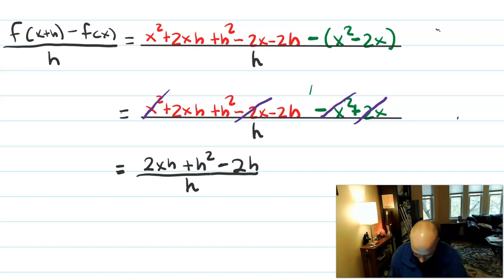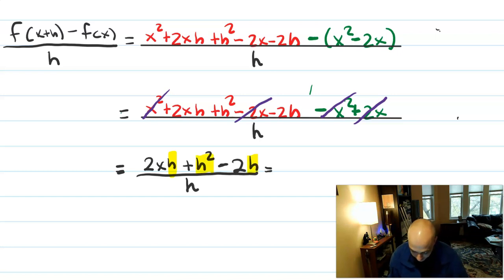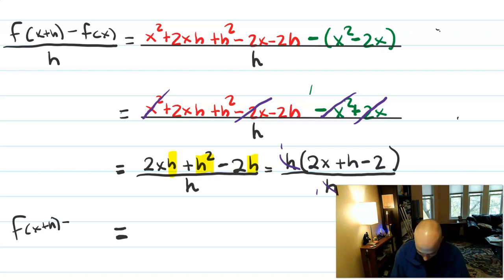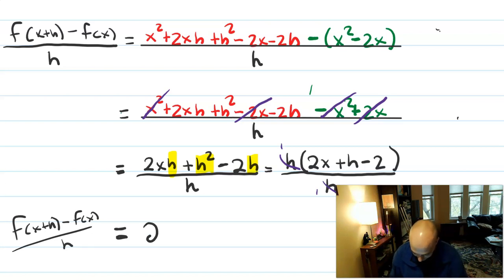Once we've done that, we rewrite with just what remains: 2xh plus h squared minus 2h, all over h. I see a common factor of h in every single term of the numerator. Pulling out an h gives h times quantity 2x plus h minus 2, still divided by h. Those h's reduce to 1, and we get our final answer: the difference quotient simplifies to 2x plus h minus 2.